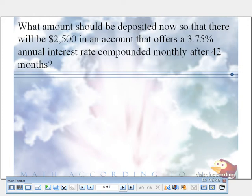So we have a present value problem because it says how much should we put away now. That's the key thing. And it also says compounded. So we're solving for P.